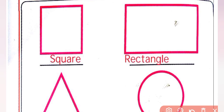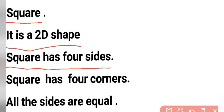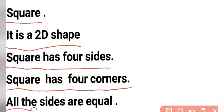In the square shape, all sides are of equal length. All the sides are equal length. What are the properties of a square? It is a 2D shape. Square has 4 sides. Square has 4 corners. All the sides are equal.